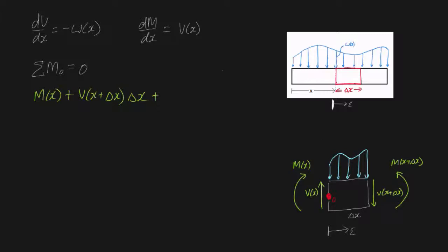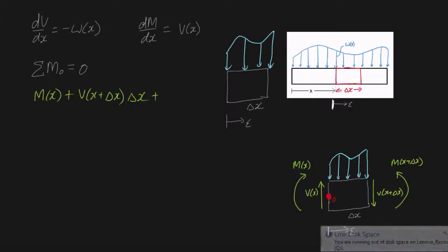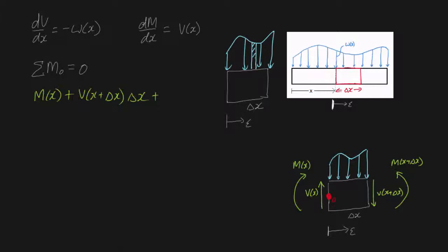What is the moment due to this distributed load? To get a good understanding, let me just redraw our chunk of length Δx with the distributed load on top of it. And don't forget that this is epsilon, which we defined earlier in the previous video. In order to get the moment due to this entire distributed load, I need to find the moment due to a small slice and integrate. So let's consider a small slice here. The area of this slice is the force — this is dF — and that's going to be equal to w(ψ) times dψ, because that's the area of this rectangle.